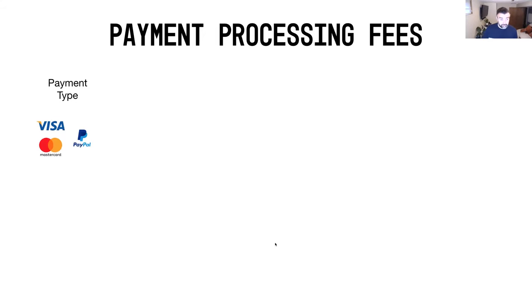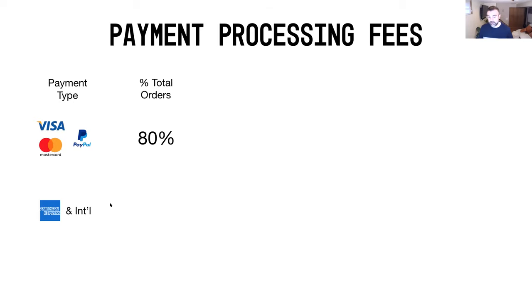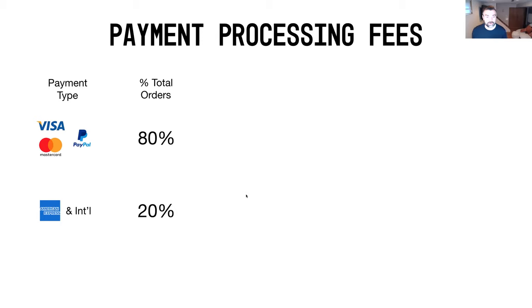Let's look at some common payment types. You've got Visa, MasterCard, and PayPal. You may also be offering American Express or international cards like Discover Card. A typical breakdown is that most merchants or brands see about 80% of their volume coming through Visa, MasterCard, or PayPal, with the balance coming through American Express or other international cards if offered. I'm going to use Shopify's pricing as an example here to illustrate this.